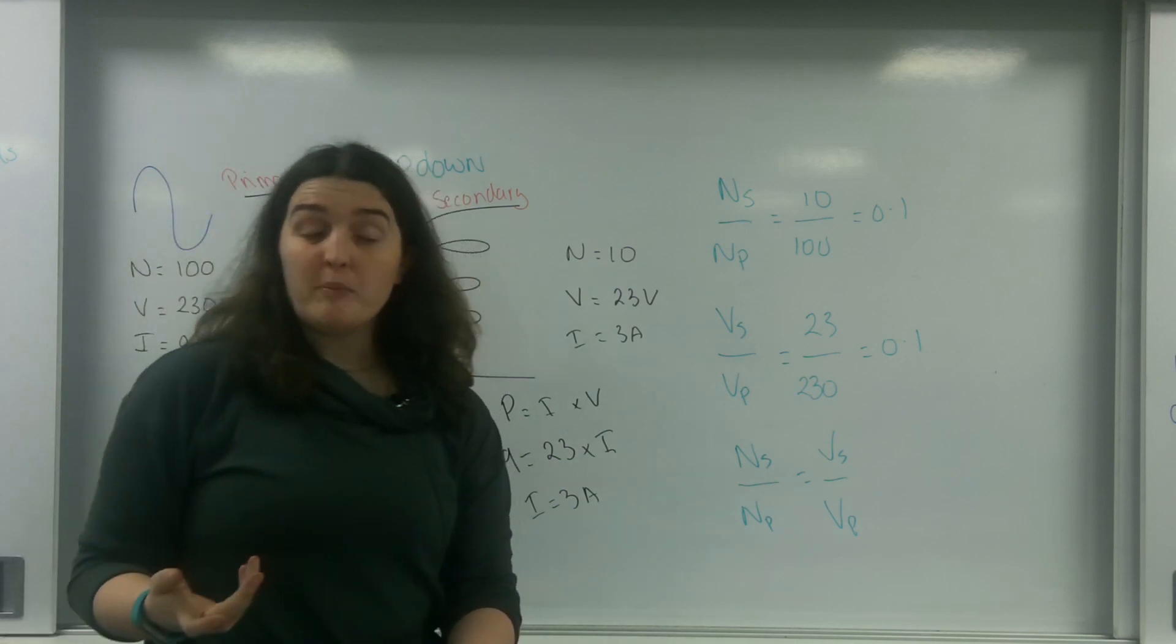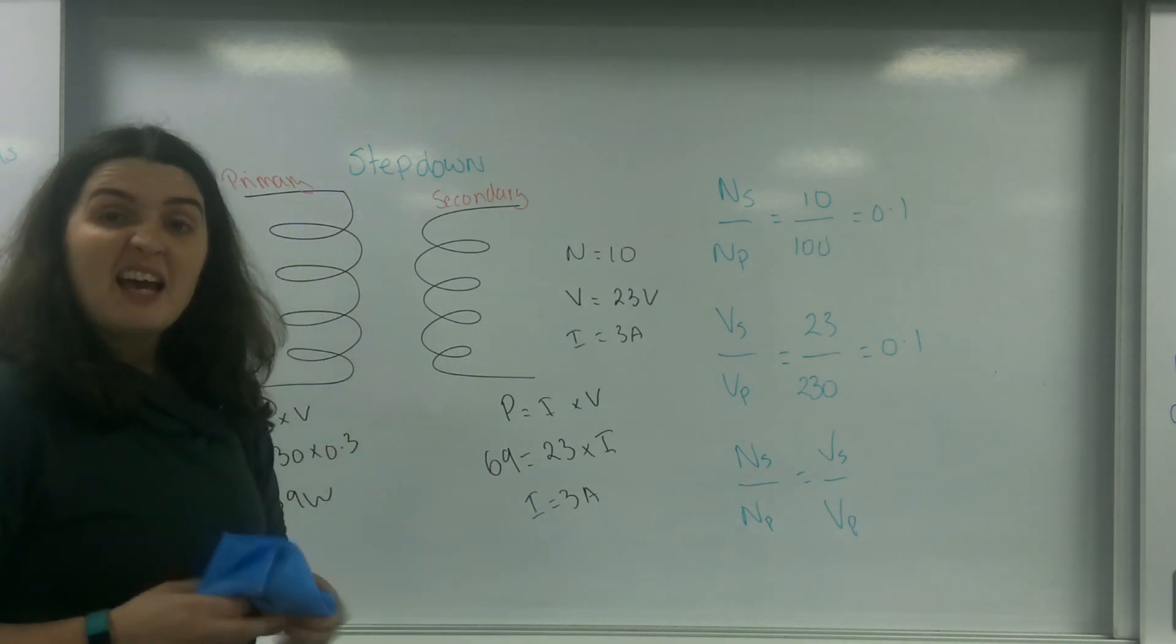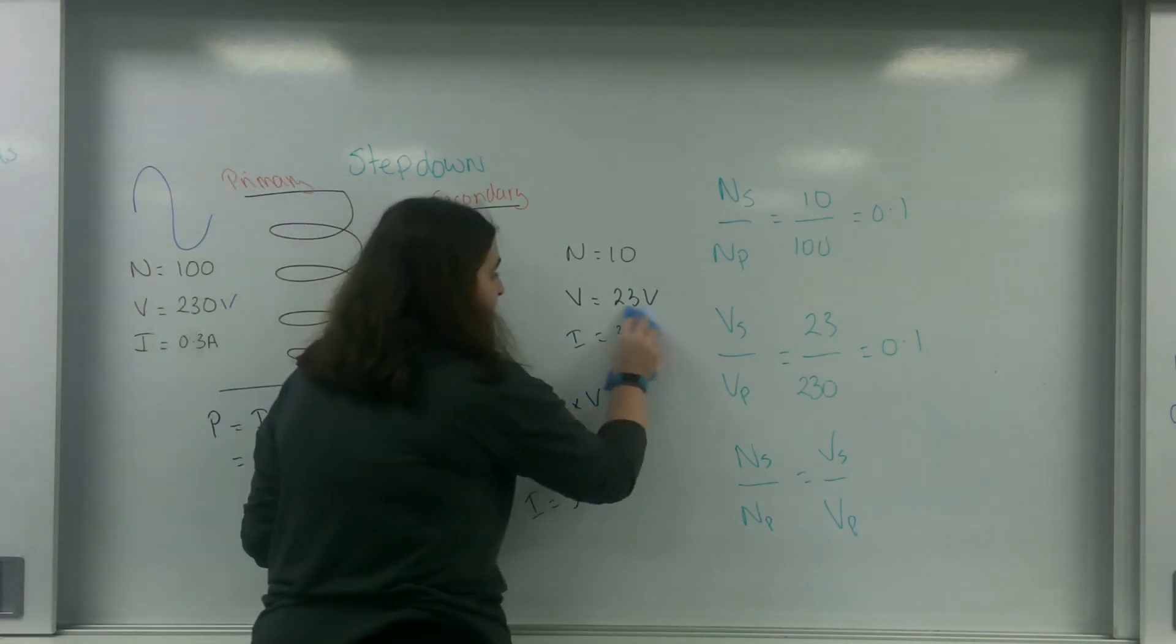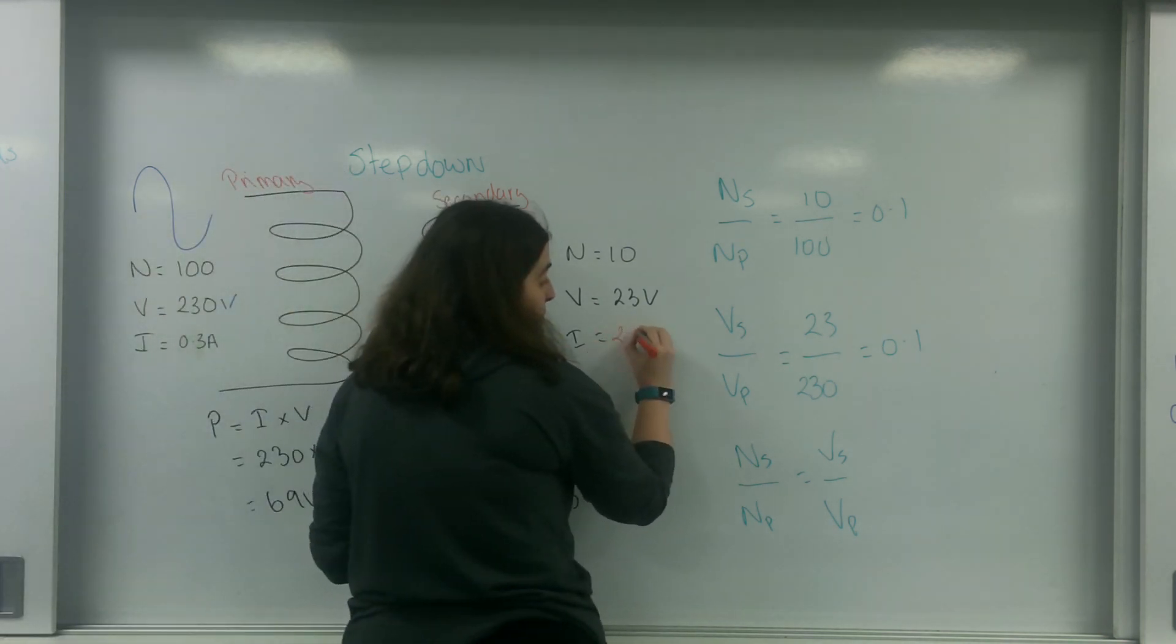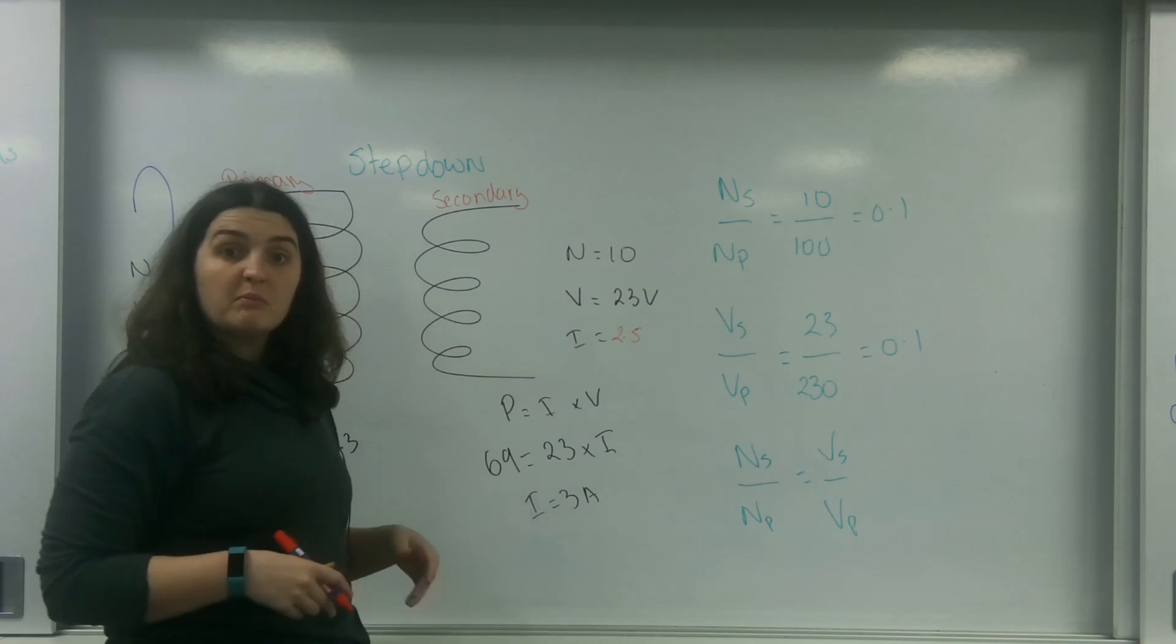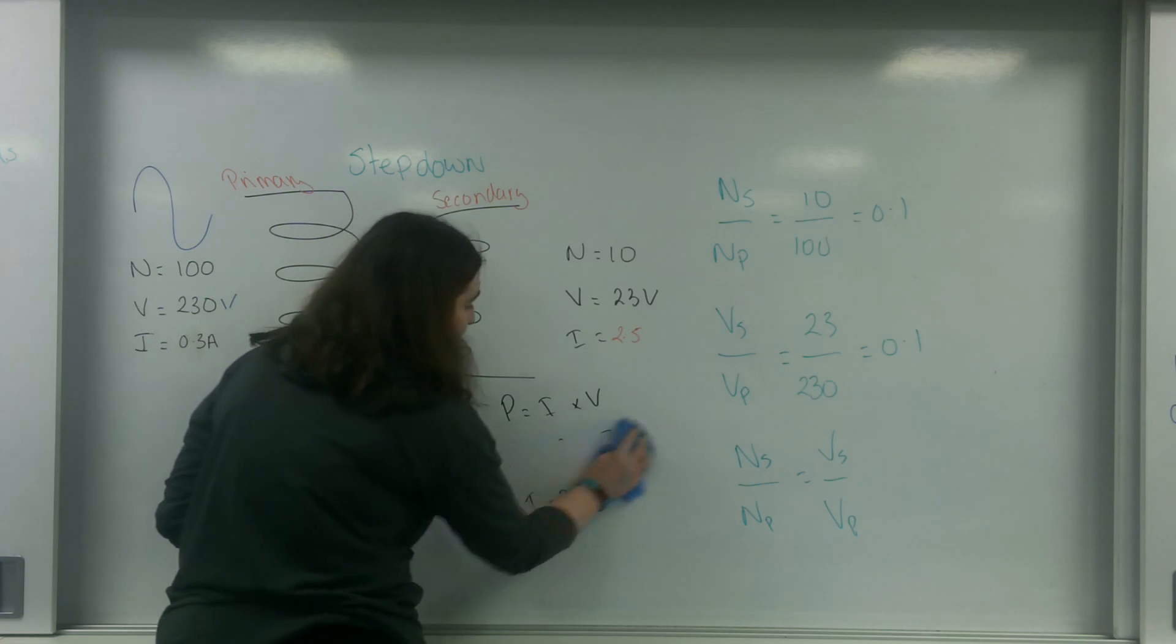Now sometimes my current here won't be 3 amps. Let's say I only got 2.5 because I might have lost some. Not all the current was induced correctly. So let's see how much power I would have then.